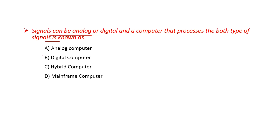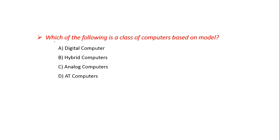Signals can be Analog or Digital. A computer that processes both types of signals is known as — Option A: Analog, B: Digital, C: Hybrid, D: Mainframe. The correct answer is C: Hybrid. Hybrid Computers process both Analog and Digital types of signals.